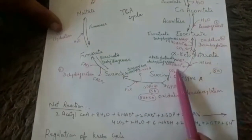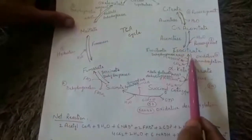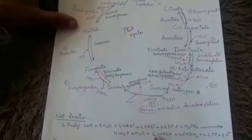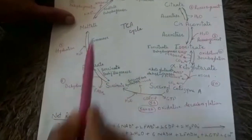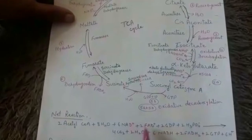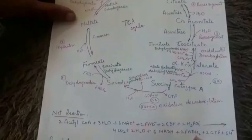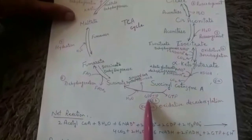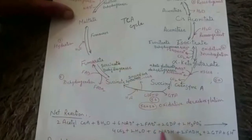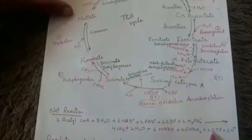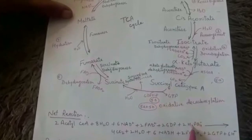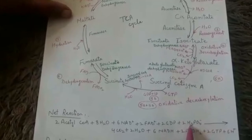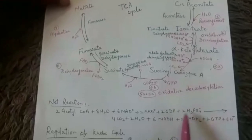Three NADH are reduced per turn, so for two acetyl coenzyme A, six NAD are reduced to six NADH. One FAD is reduced to FADH2 per turn, giving two FADH2 for two acetyl coenzyme A. One GTP is produced per turn from GDP and inorganic phosphate, giving two GTP total from two acetyl coenzyme A.